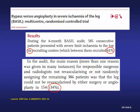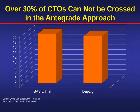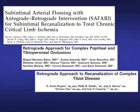Looking at the patients who were included in the BASIL trial, about 25% could not be crossed in an antegrade fashion. These were a very select group of patients who were candidates for both endo and surgery. Even at Leipzig, where operators have a lot of experience with CLI and endovascular intervention, they also fail to cross lesions in antegrade fashion about 20–25% of the time.